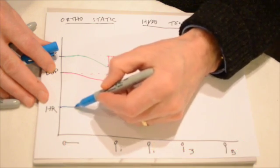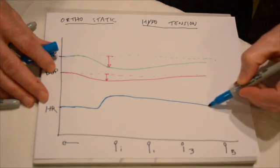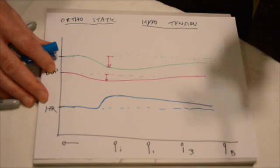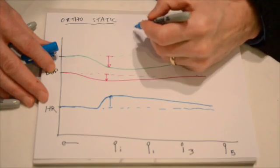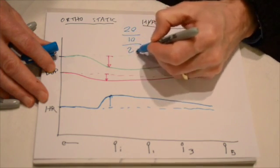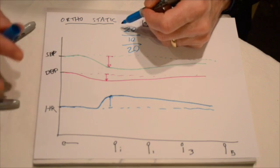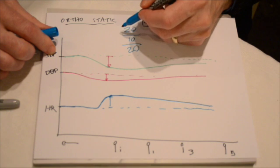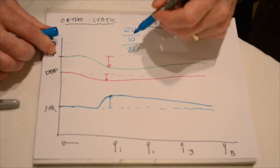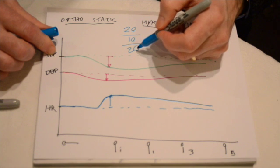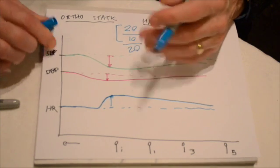Your heart rate is cruising along lying down. You stand up and the first thing that happens is your heart rate goes up, and then it tends to settle back down, not typically getting to exactly where it was before. We have normal values for how much this should be. This is what I call the 20-10-20 rule: the top number should not drop more than 20 millimeters of mercury, the bottom number should not drop more than 10 millimeters of mercury, and the heart rate should not go up more than 20 beats per minute. If either of these exceeds the threshold, you can call it orthostatic hypotension.